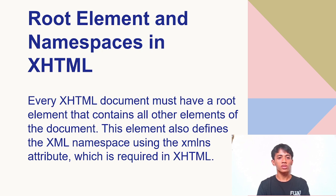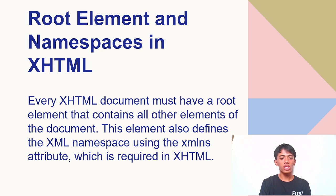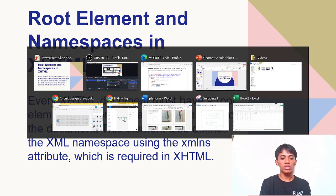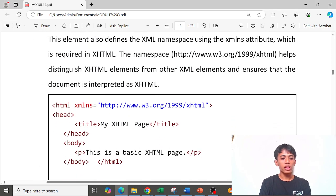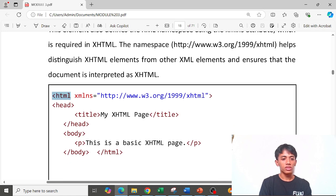Let's proceed to the root element and the namespace in XHTML. Every XHTML document must have a root element that contains all the other elements of the document. These elements also define the XML namespace using the xmlns attribute, which is required in XHTML. Here is our HTML tag and the closing tag as the root element.